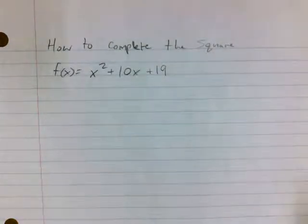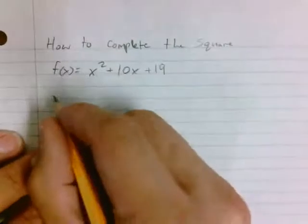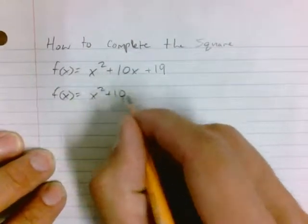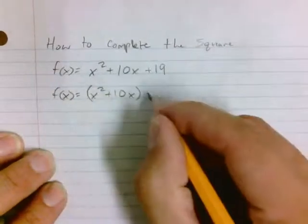You're going to start to complete the square by taking the first part of your equation, just the x squared plus 10x part, and wrap it with parentheses.